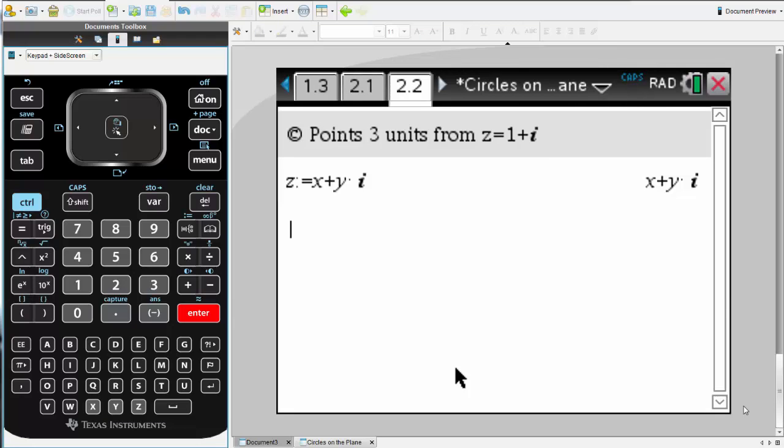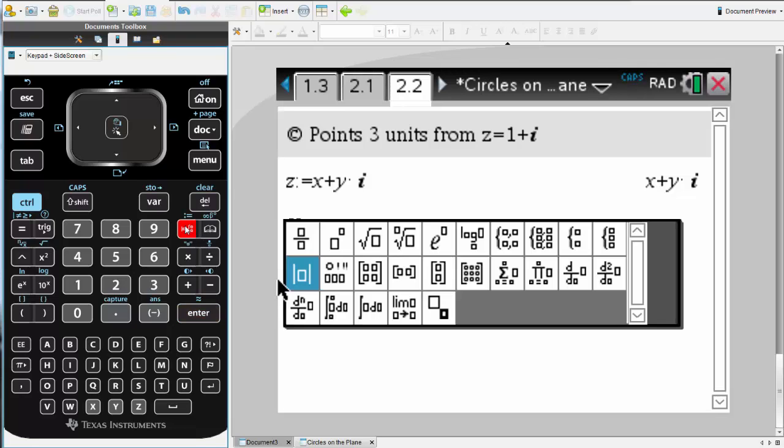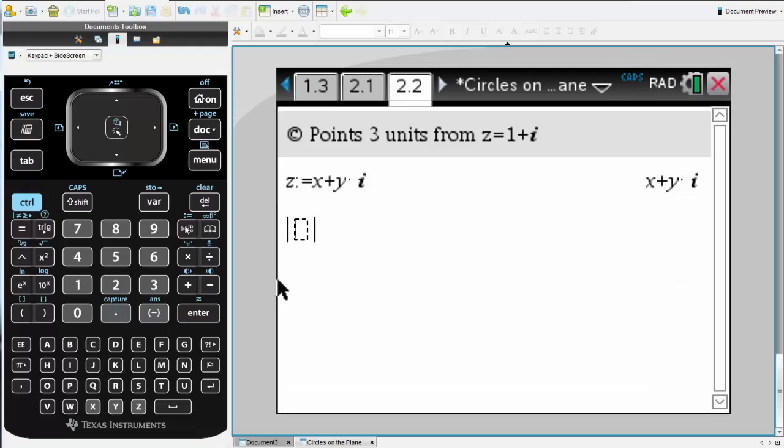OK, let's see how you went. Just a little reminder at the top, we're looking for the points that are 3 units away from z equal 1 plus i. Because we're looking for a distance, we'll use the absolute value of z minus 1 plus i.